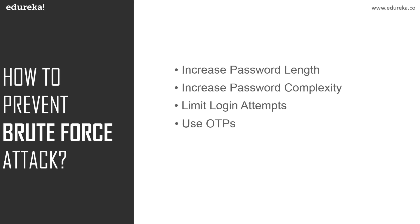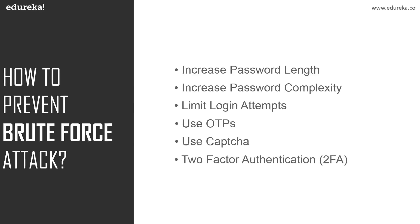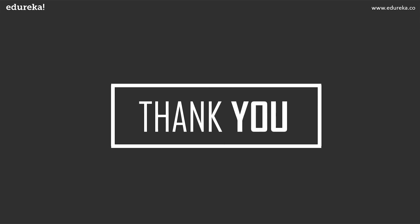Using captchas is another very powerful prevention method — many web applications use this because brute forcing tools mainly try to guess username and password automatically, and captchas make it almost impossible to bypass the login. Finally, you can use two-factor authentication: two steps where the user authenticates — for example, username and password first, then a secret question. These are the methods you can use to prevent brute force attacks. If you like this video, like and share, and stay tuned for more videos on ethical hacking.